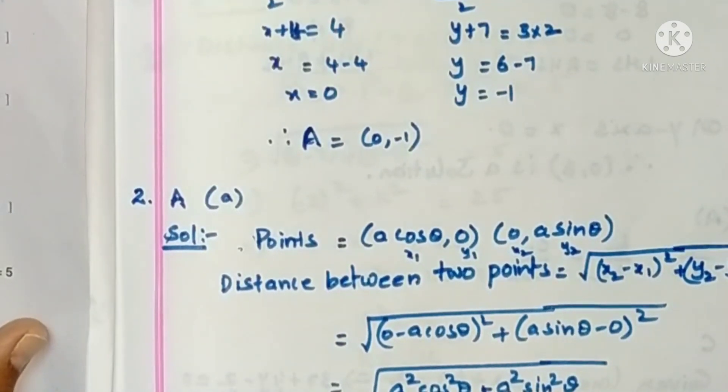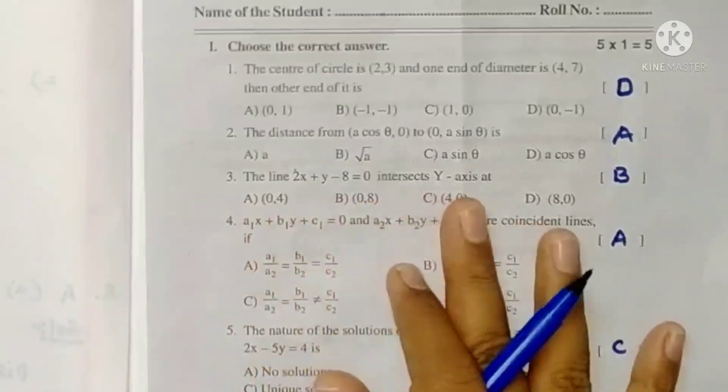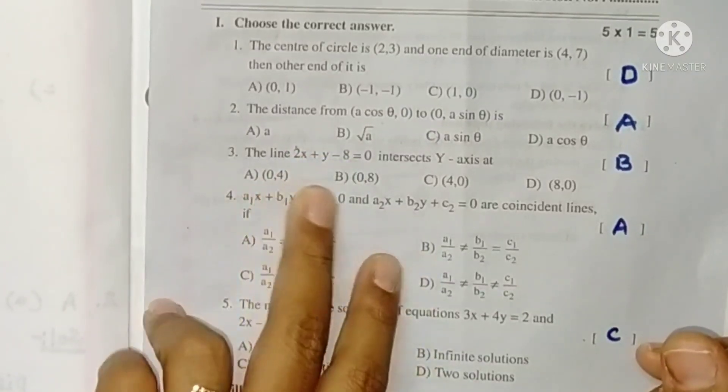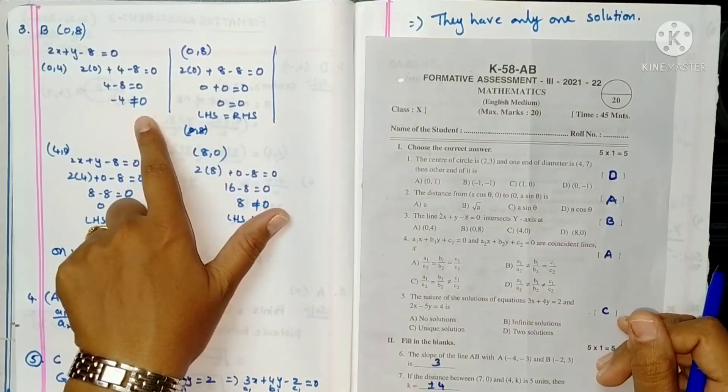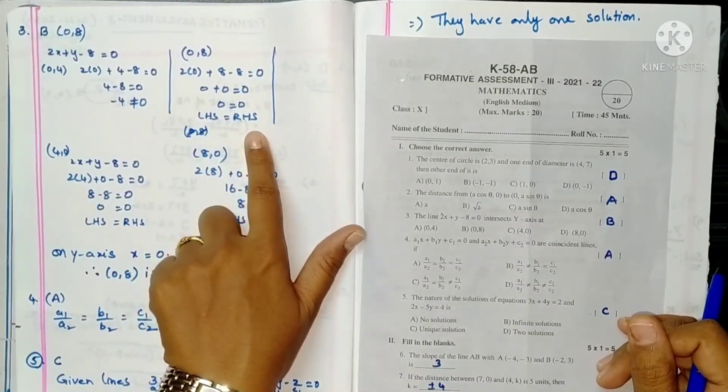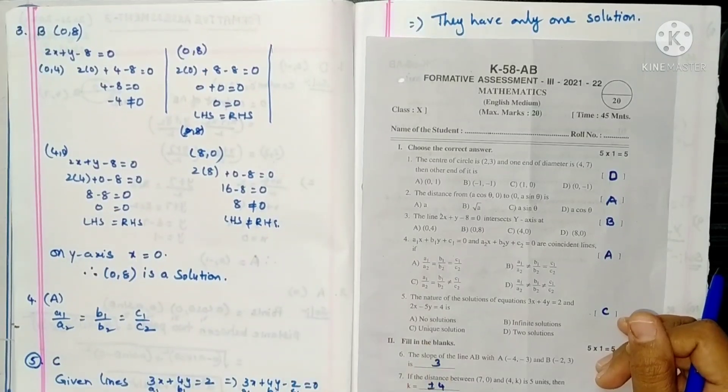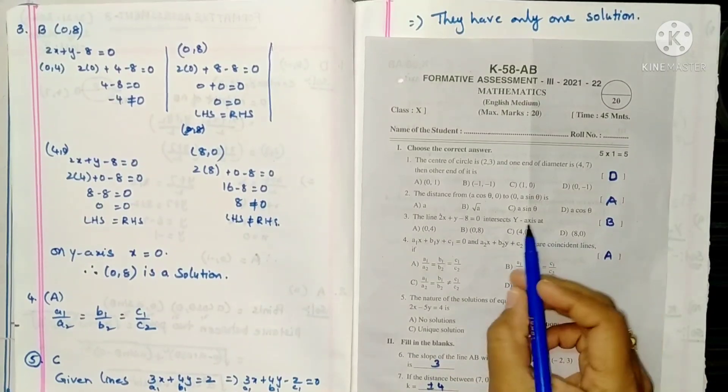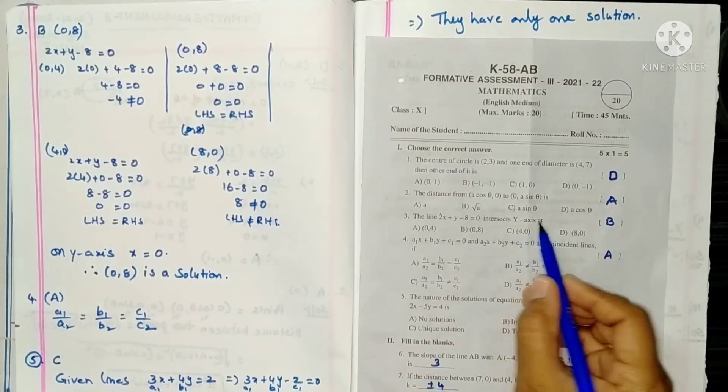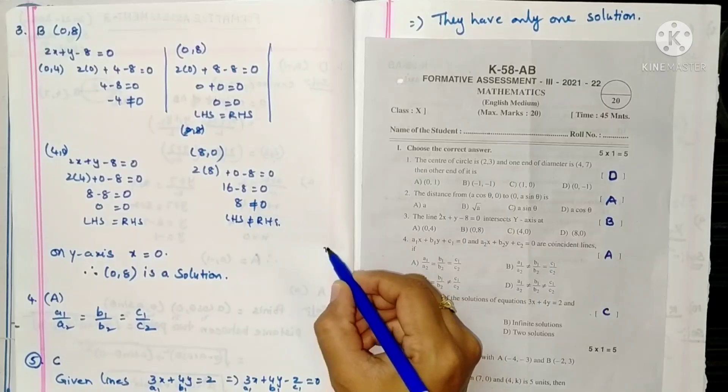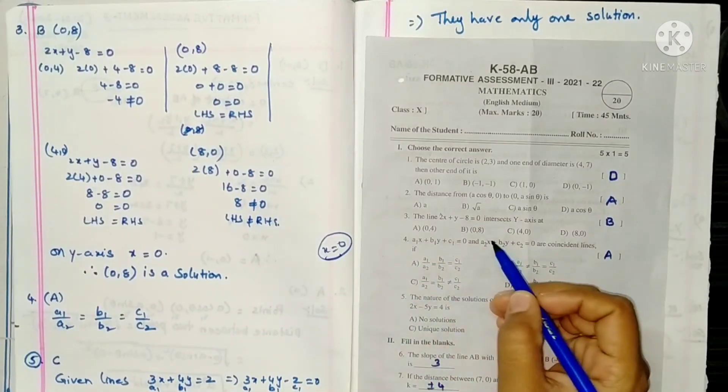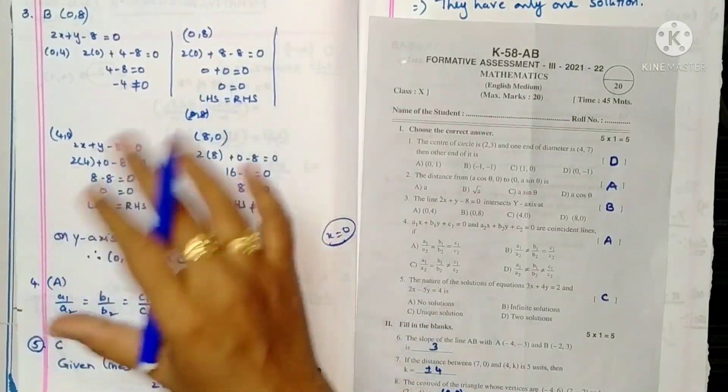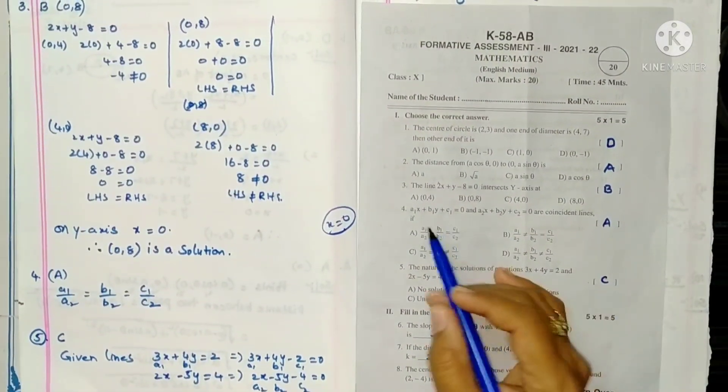Third one, the line 2x plus y minus 8 equals to 0 intersects y-axis at - so we have four points in the options. We need to find out which point is the answer by substituting x and y values. First one LHS not equal to RHS, second they are equal, third also equal, and fourth LHS not equal to RHS. Where it intersects, LHS equals RHS - that is the solution. But here they are asking intersect y-axis. Y-axis equation is x equals to 0, so x is 0 here and the satisfying point is B (0,8).